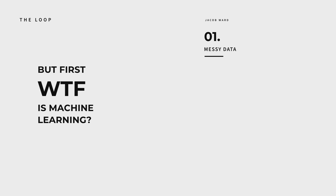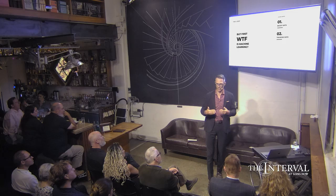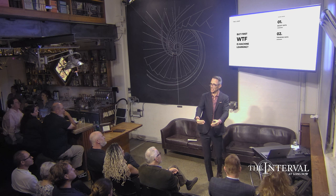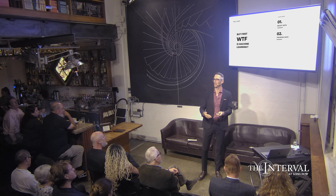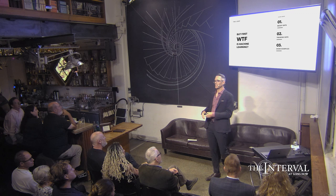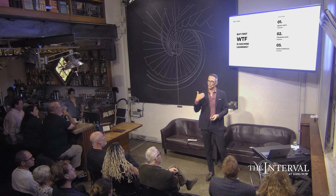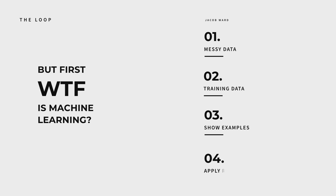So instead, you find comparable data — training data — that in some way has either direct application to the data you're looking at, it's like a tiny subset of it, or it's close enough of a parallel that it might be useful in some way. You use that to create basically examples of right and wrong answers that you can give to an algorithm, and then using those right and wrong examples, instead of just straight coding instructions, you can turn that algorithm loose to apply the rules it has learned on the messy data that you started with.